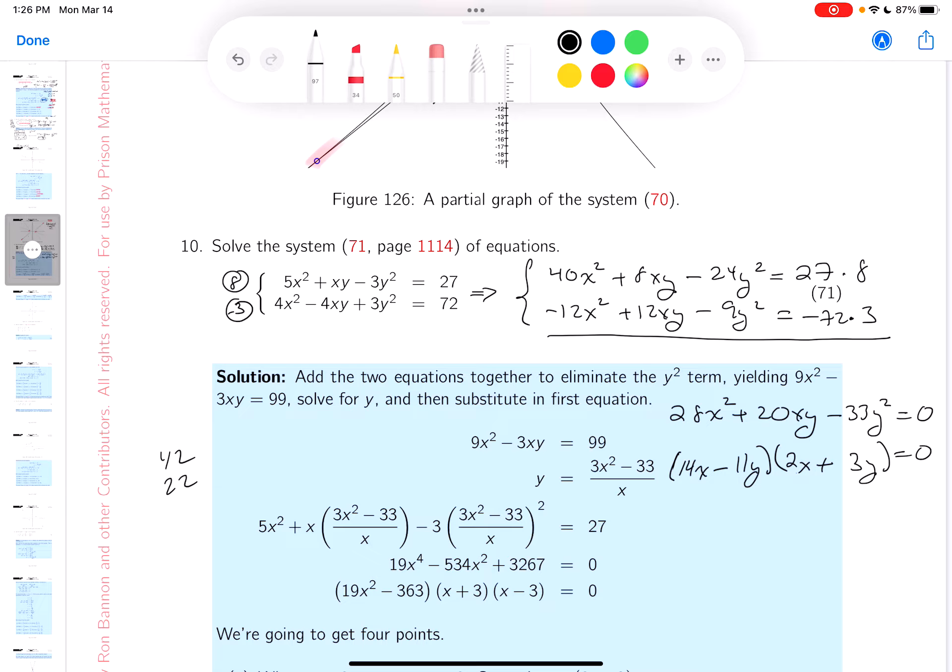Then what do you do? Through your product rule, you'd say 14x equals 11y, x equals 11/14ths of y. Over here, 2x equals minus 3y, or x equals minus 3 over 2y. And we've done this. Then you plug it back in,